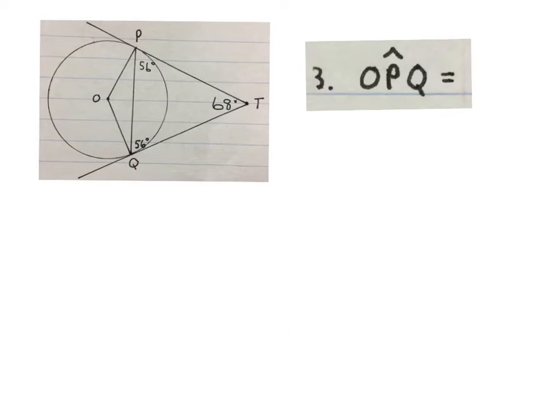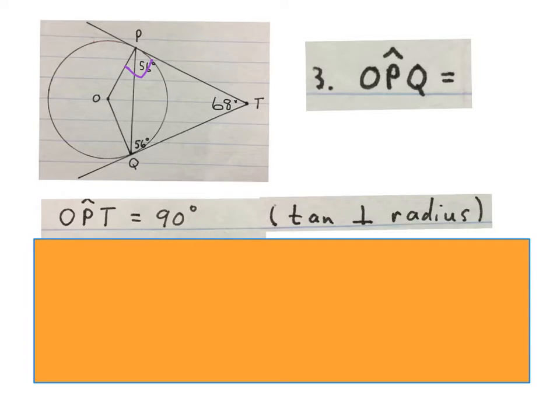The next question asks us to work out OPQ, the angle at P. So I go from O to P to Q. O to P to Q, little angle there. So we write OPT equals 90 degrees, tan perpendicular to radius. We know that that's a radius and that's a tangent. And the theorem says then that angle will be 90 degrees.